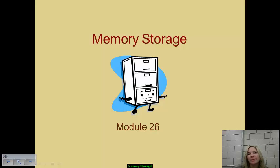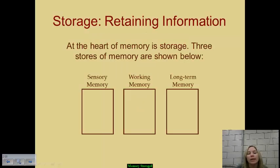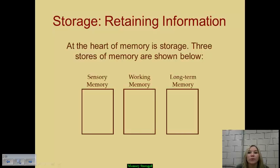We've gone through the encoding process of taking information in and establishing it as memory. Now we'll be taking a look at memory storage, basically the retention of information that's been encoded. Storage is at the heart of memory because if something isn't stored in our brains for us to retrieve later on, or if something isn't stored properly during encoding, our ability to hold onto that piece of information or recognize it later will be significantly impaired.